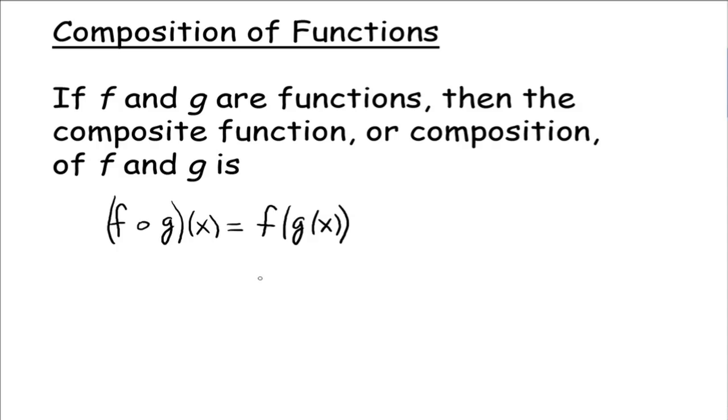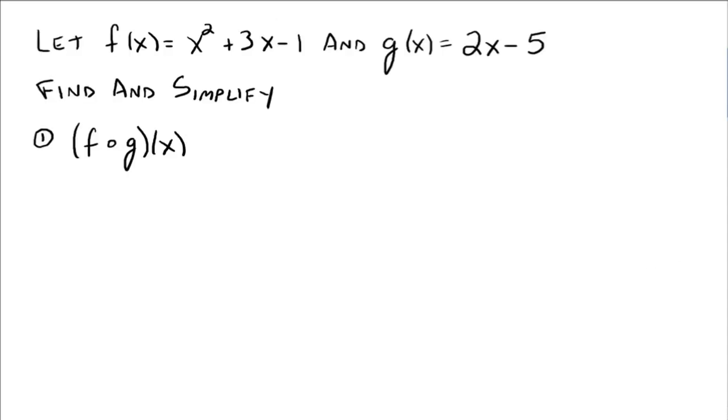All right, so let's look at some examples. Suppose we have f(x) = x² + 3x - 1, and g(x) = 2x - 5. We want to find and simplify the following.